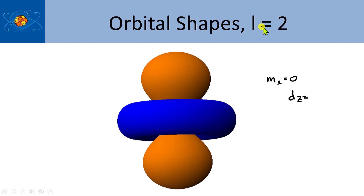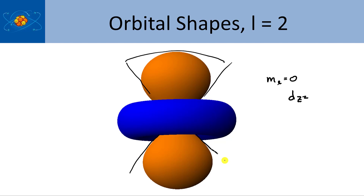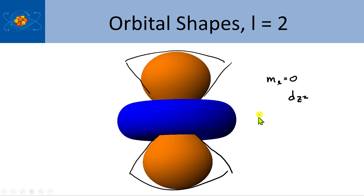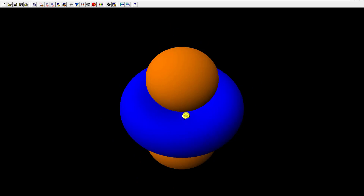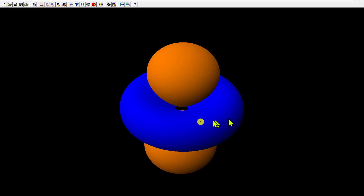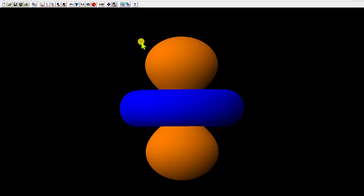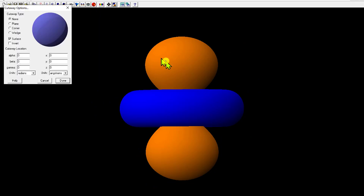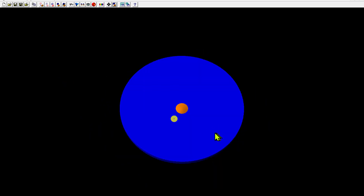When m sub L equals 0, this is the dz squared orbital. When L equals 2, you expect two angular nodes — one conic node surrounding the upper lobe, and another one surrounding the lower lobe. Looking down at it from above, you can see there's a little donut shape — this is actually a donut-shaped object known as a torus. If I do a cutaway, you can see the donut hole in it.